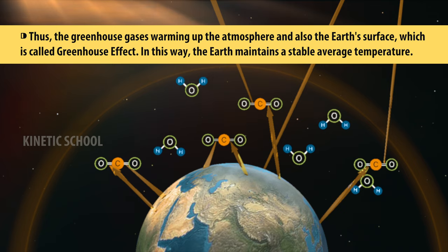Thus, the greenhouse gases warm up the atmosphere and also the Earth's surface, which is called the greenhouse effect. In this way, the Earth maintains a stable average temperature.